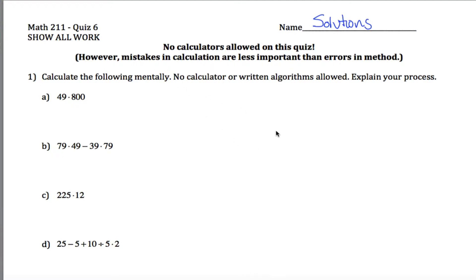Okay, here are solutions to Quiz 6 for Math 211. This first problem, we're supposed to calculate these four things mentally. No calculator or written algorithms allowed, but explain your process.